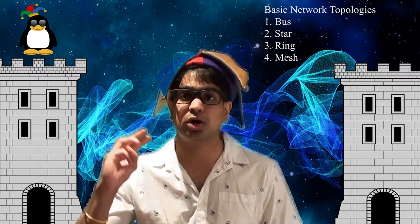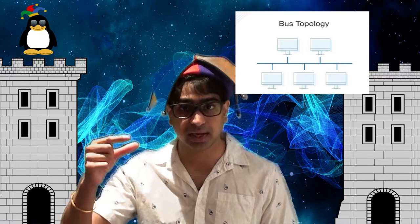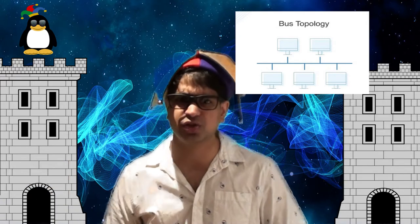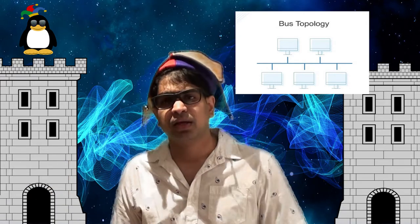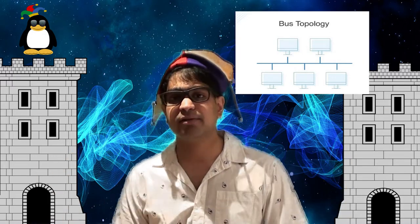Earlier we had the different types of networks in terms of size. Now we're going to talk about topologies, or architectures — the different ways you can build your network. The four basic network topologies are bus, star, ring, and mesh. A bus topology orients all devices on a network along a single cable running in a single direction from one end of the network to the other, which is why it's sometimes called a line topology or backbone topology. Data flow on the network also follows the route of the cable, moving in one direction.